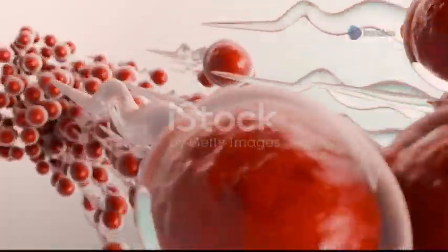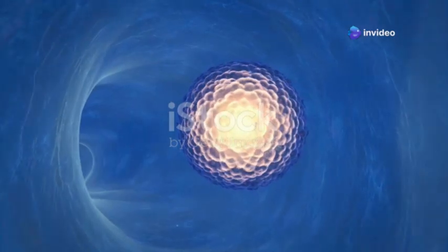It's a challenging journey, and only the strongest and luckiest will make it far. They swim through the vagina, past the cervix, and into the uterus, all heading towards their ultimate destination, the fallopian tubes.